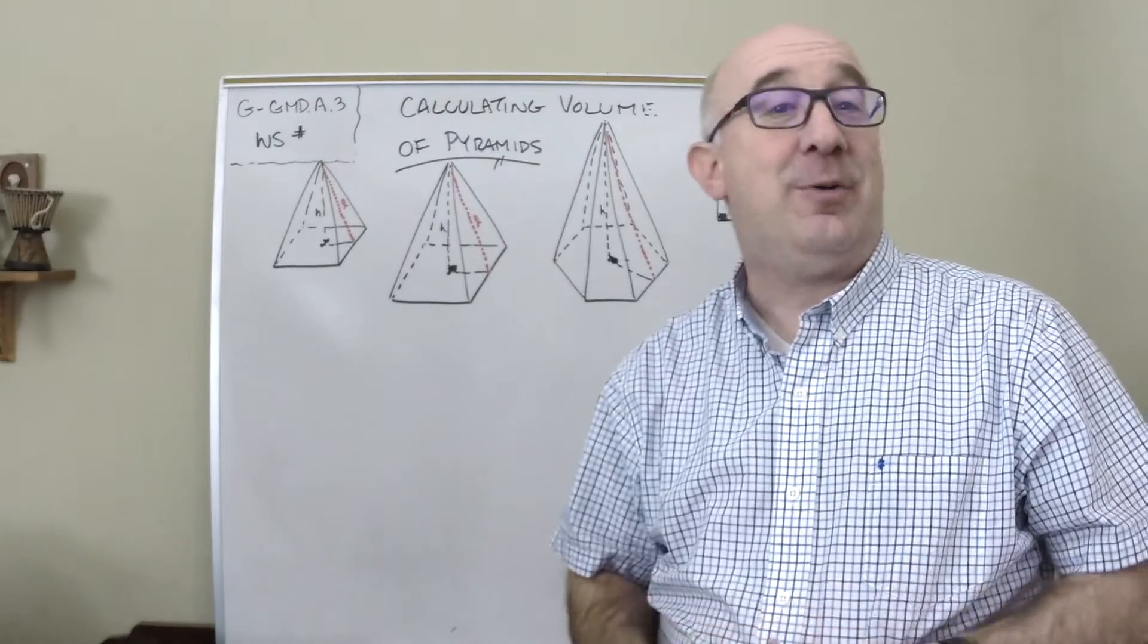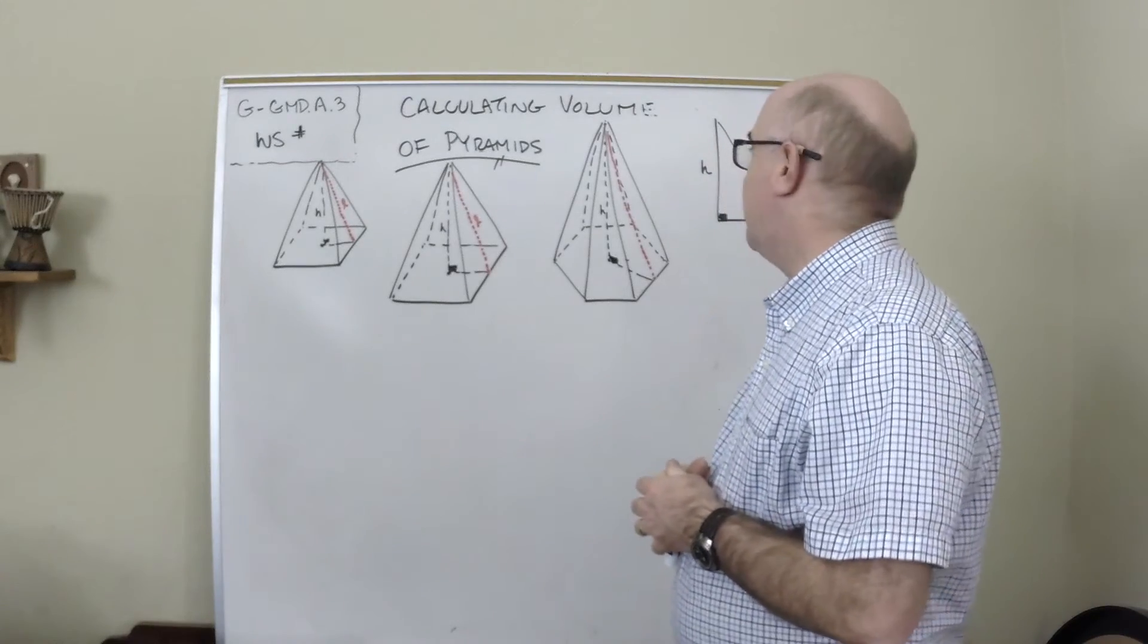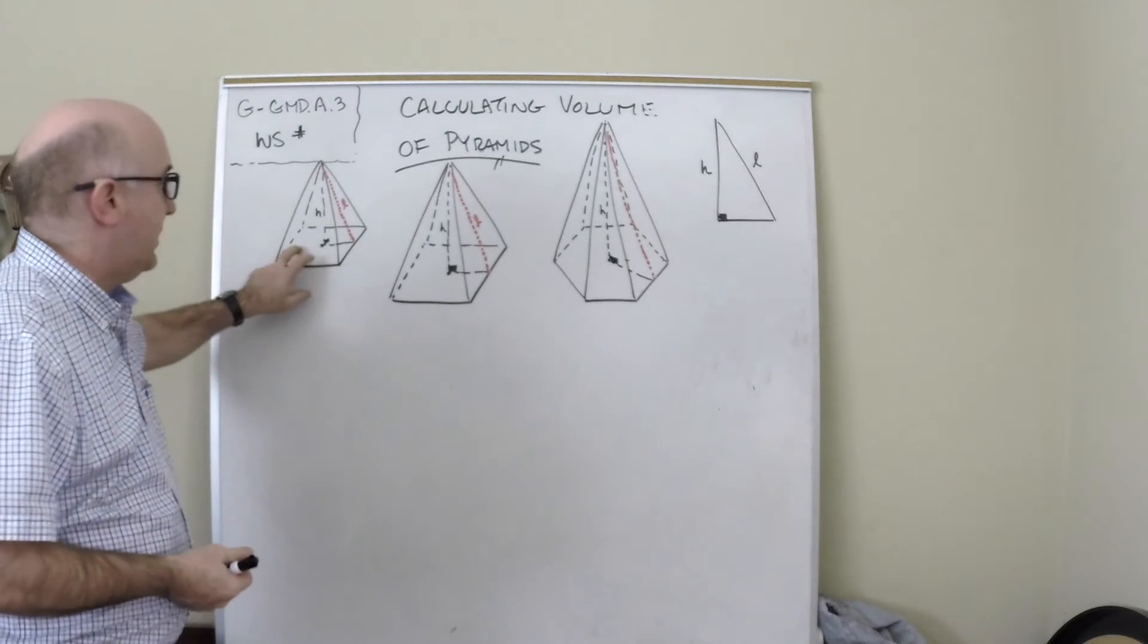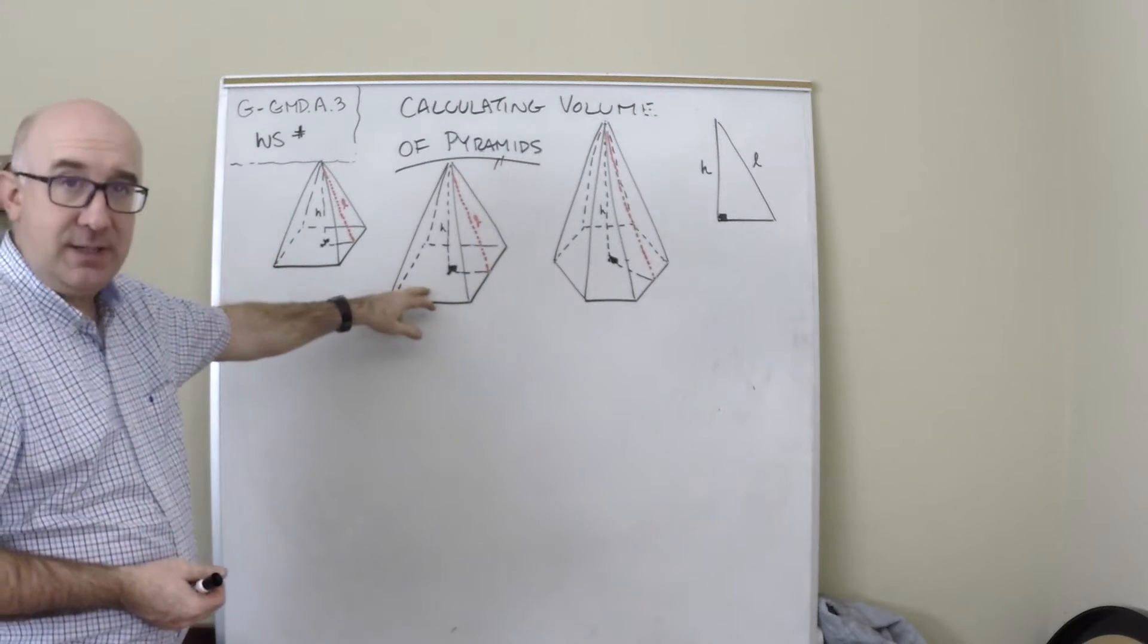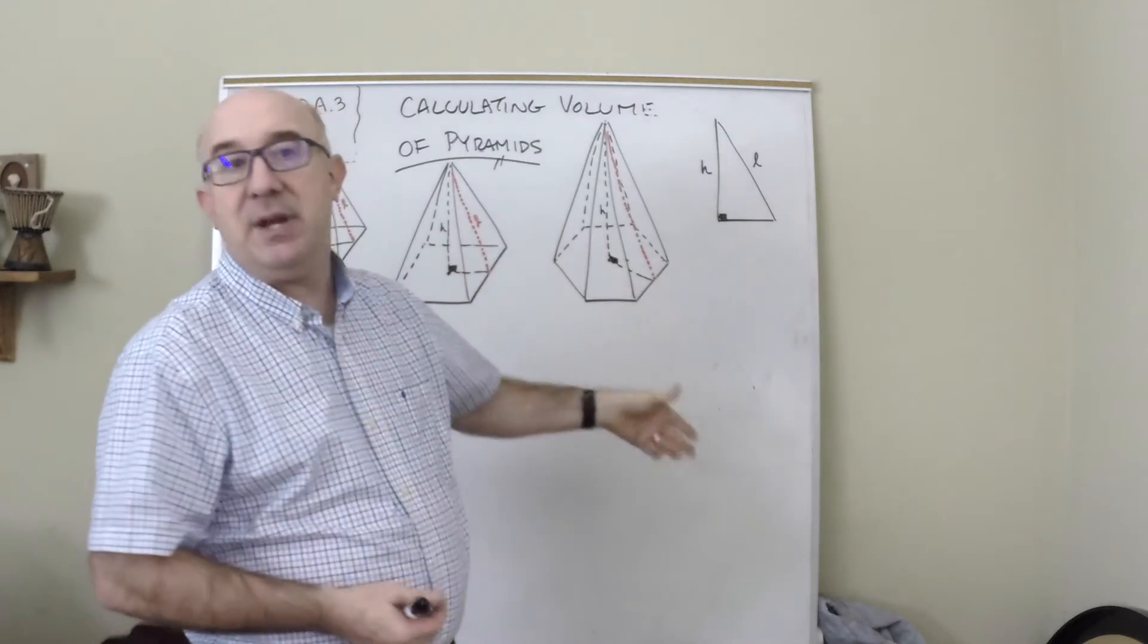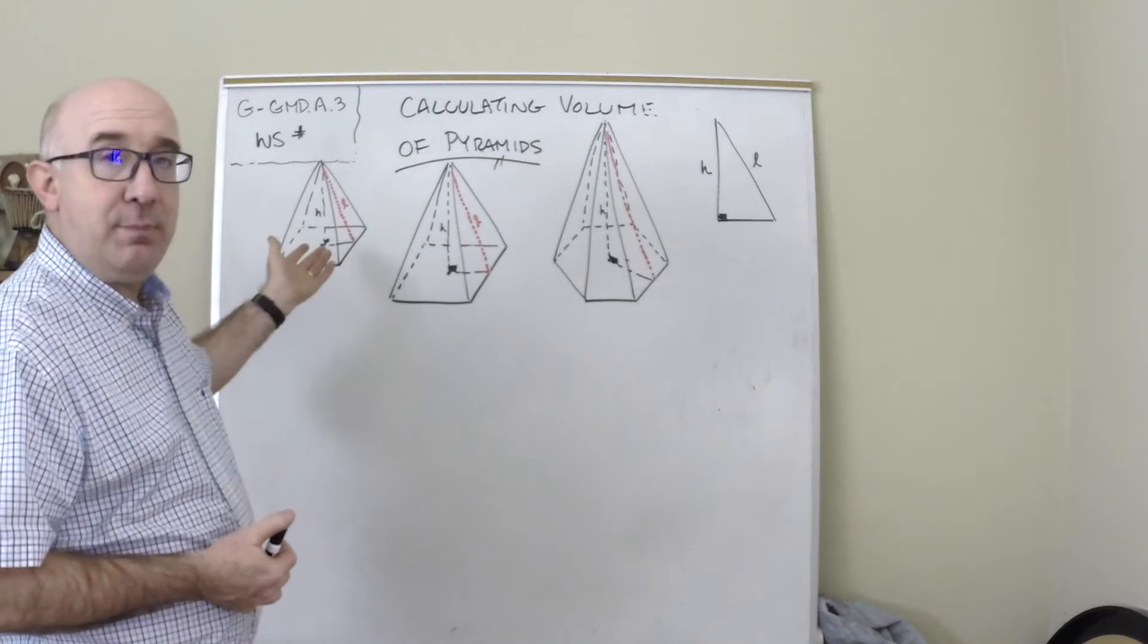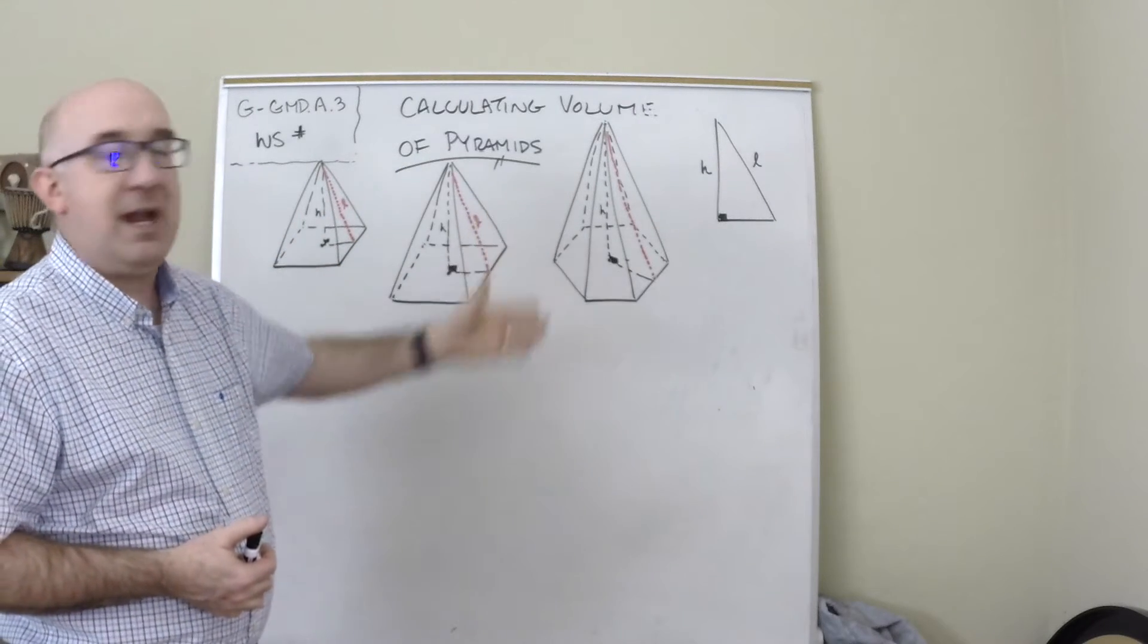They also have different terminology. You have a base - what it's sitting on here is its base. It could be a square base, a hexagonal base, or a triangular base, and so on. They get named by that, like this would be a square pyramid, a rectangular pyramid, a hexagonal pyramid, and so on.